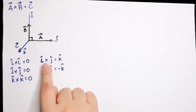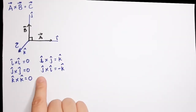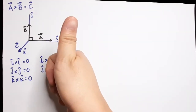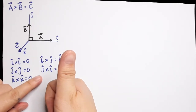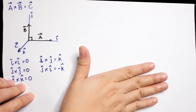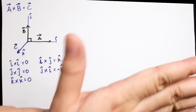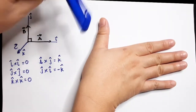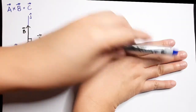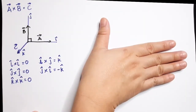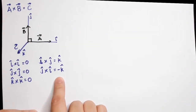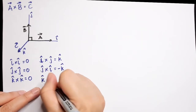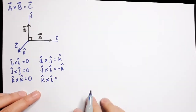So i cross j is equal to k. For the opposite case, if the first vector is j going up and the second vector is on positive i, then the palm is facing into the paper — that is negative k. So j cross i gives negative k.